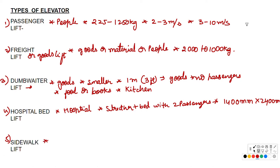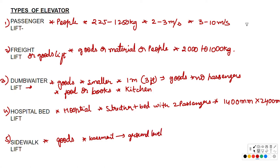Next is the sidewalk elevator. These are a special type of freight elevator that move goods from the basement to the ground level, and are controlled via an external switch.